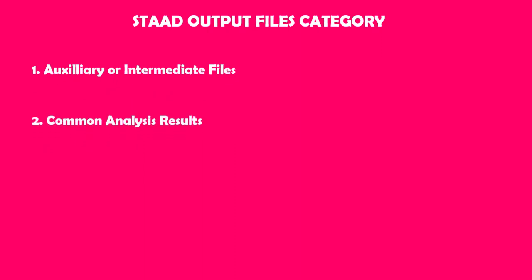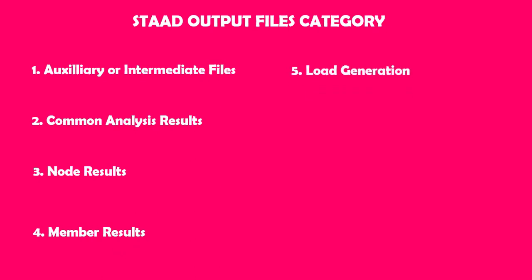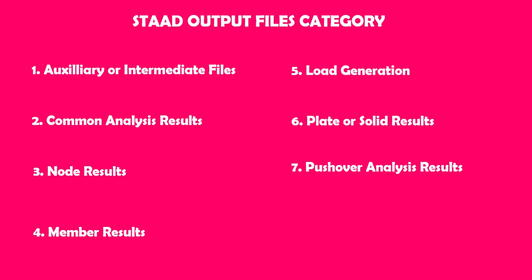First of all, we will discuss the categories of STAAD files that are generated. When you run your analysis, these files are generated mostly in the folder where you have saved your STAAD model. There are basically eight categories: the first is intermediate or auxiliary data files, second is common analysis results including node results and member results, then load generation, plate or solid results, dynamic analysis, pushover analysis results, and if you have applied design parameters, it will generate design output files in different formats.